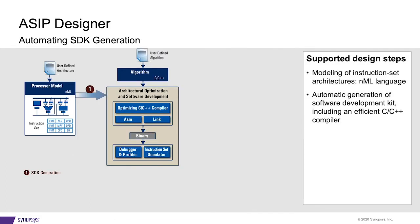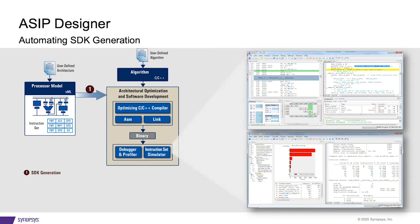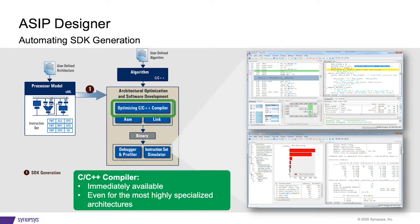From this processor description, ASIP Designer will automatically generate a fully featured software development kit, including a C and C++ compiler as well as an instruction set simulator. It comes with a graphical development environment that allows for efficient debug and profiling. And yes, ASIP Designer creates a C and C++ compiler even for the most specialized processor architecture — something we'll cover in a separate video.